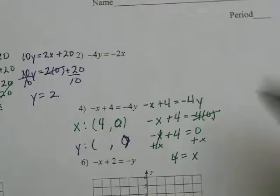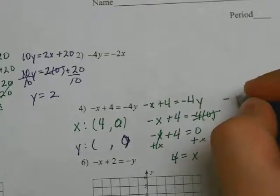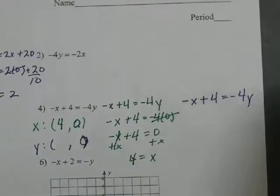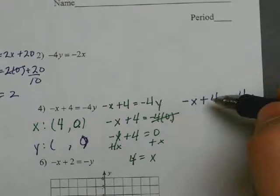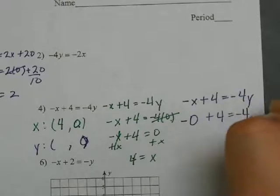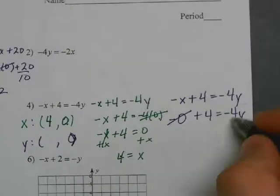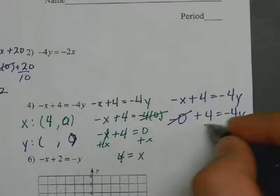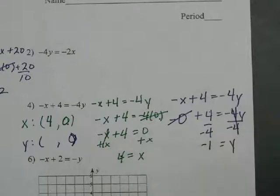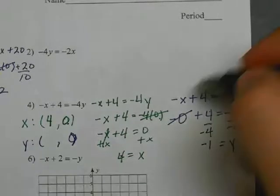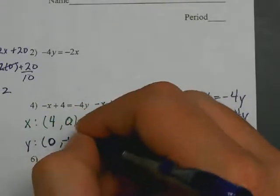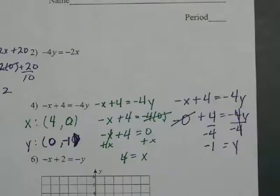Now for the y intercept, I rewrite the problem: negative x plus 4 equals negative 4y. For the y intercept, instead of substituting 0 for y, I substitute 0 in for x. That cancels, leaving me with 4 equals negative 4y. I divide both sides by negative 4, and y equals 4 divided by negative 4 which is negative 1. So when x is 0, y is negative 1, giving me the y intercept 0 comma negative 1.